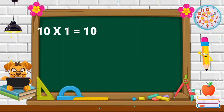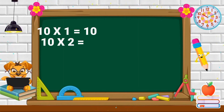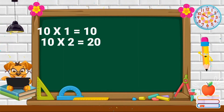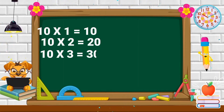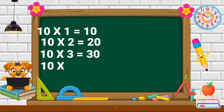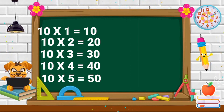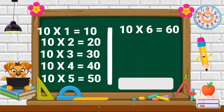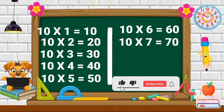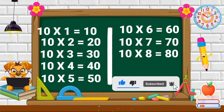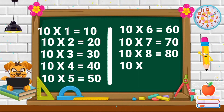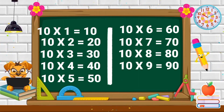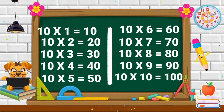Repeat again. 10 ones are 10. 10 twos are 20. 10 threes are 30. 10 fours are 40. 10 fives are 50. 10 sixes are 60. 10 sevens are 70. 10 eights are 80. 10 nines are 90. 10 tens are 100.